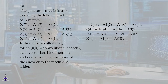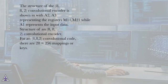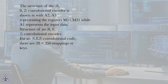It should be recalled that for an N,K,L convolutional encoder, each vector has L·K dimensions and contains the connections of the encoder to the modulo-2 adder. The structure of the 8,8,2 convolutional encoder is shown, with A2 and A3 representing the registers M11 and M21, while A1 represents the input data.